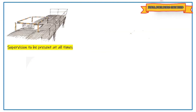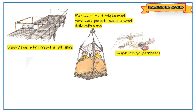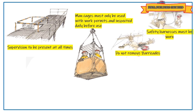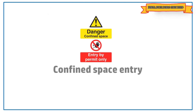Work at height: supervision must be present at all times at work-at-height locations. Man cages must be used with work permits and inspected daily before use. Do not remove barriers. A safety harness with a double hook must be worn at all times while working at height or on an elevated platform. Do not remove handrails. Check the ladder before use.